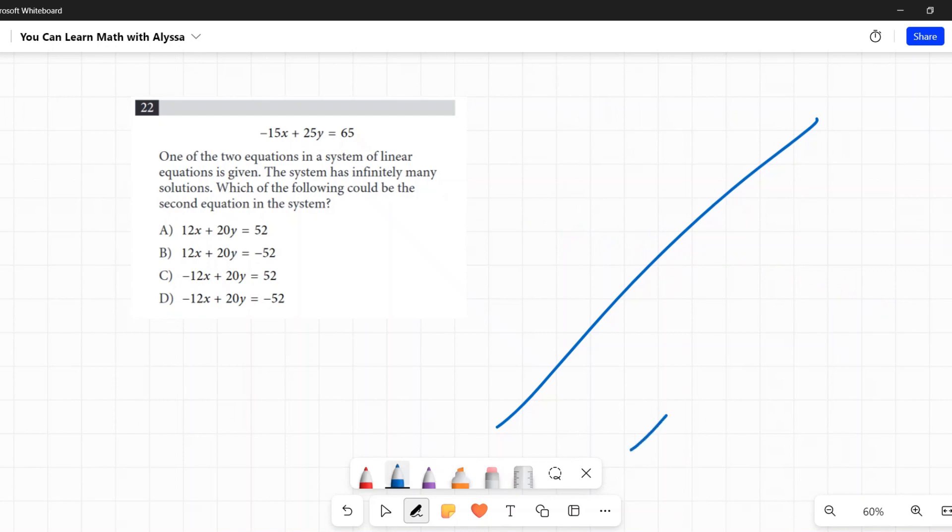There are only two other options: you can have parallel lines with no solutions, they never cross. Or you can have lines that are on top of each other, they're the same line. That is when you have infinitely many solutions, when they are exactly the same line.